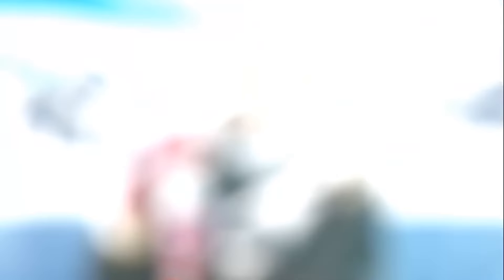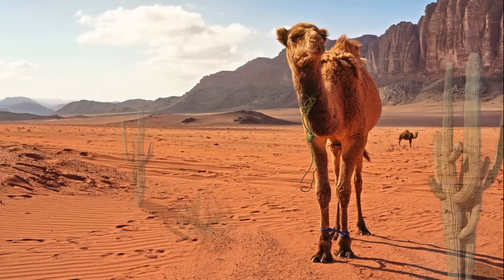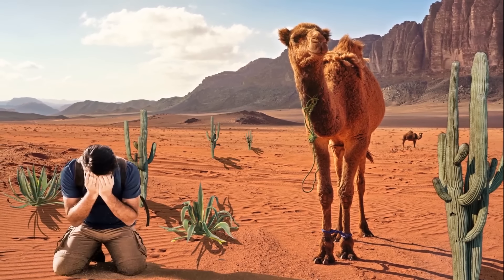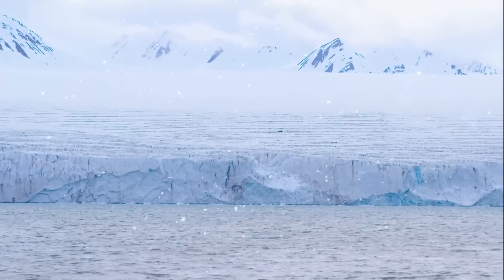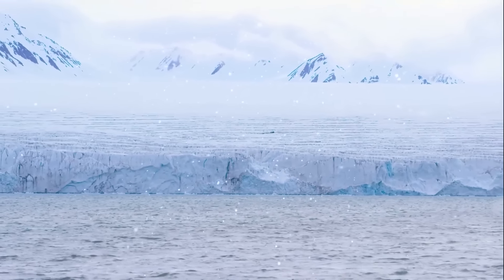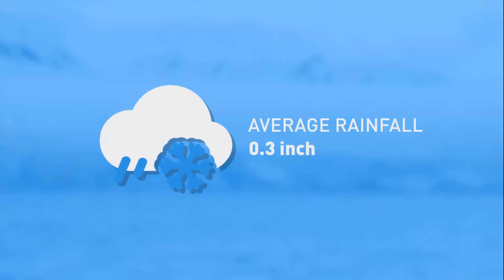When we think of deserts, we picture camels and cacti and people struggling to find water. But in Antarctica, it's a whole different story. The struggle isn't to find water. It's to find anything that's not covered in ice. And the average rainfall has been just over 0.4 inches in the past 30 years.